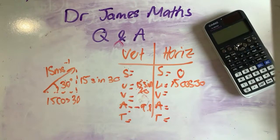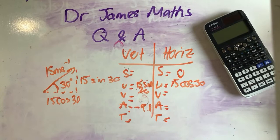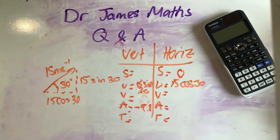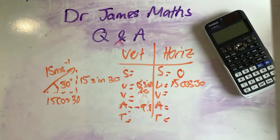Horizontal is S = VT because there's no acceleration. But you can also just do SUVAT with no acceleration, because zero acceleration is still constant acceleration. Yes — for horizontal, the acceleration in projectiles is just gravity and that's only in the vertical component. But you can still use SUVAT when acceleration is zero, or you can just use speed-distance-time.